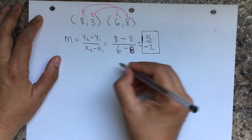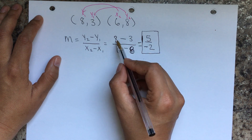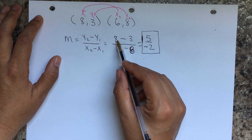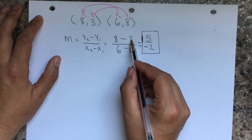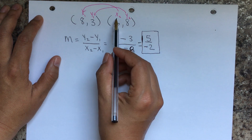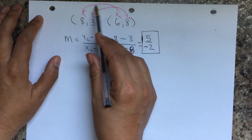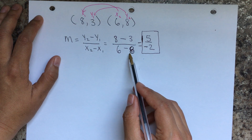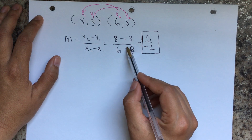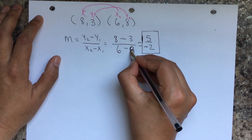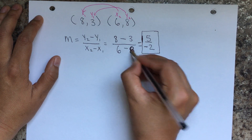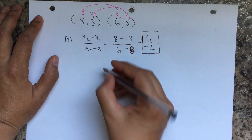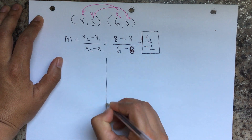We cannot simplify this fraction and cannot have a mixed number for a slope. y2 minus y1 is 8 minus 3 = 5; x2 minus x1 is 6 minus 8 = negative 2, because the number we're subtracting is bigger. So we end up with a negative number in the denominator.